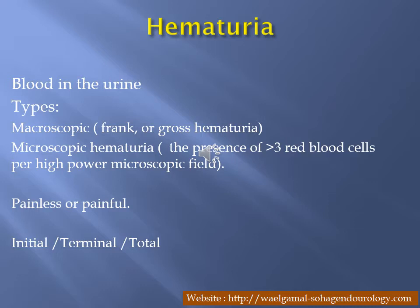Hematuria means blood in urine. You have to differentiate between types: macroscopic, seen by the patient — either gross or frank hematuria — and microscopic, which requires microscopic examination. Very important: you must know whether the hematuria is painless or painful. Painless hematuria at any age may be malignant. Painful hematuria suggests stones. Initial hematuria may relate to urethral pathology; terminal hematuria is important in bilharziasis; total hematuria is neither initial nor terminal.